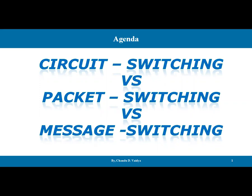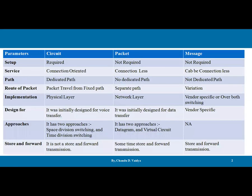Now let's take the part. Here in the slide, we have made four columns. The very first column for the parameters, second would be circuit switching, next will be packet switching, and third is message switching. These are all switching techniques available for packet forwarding in nowadays networks.